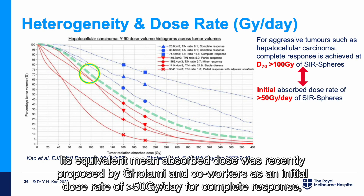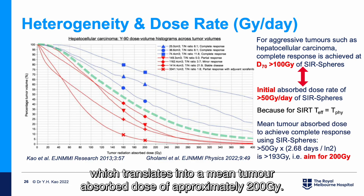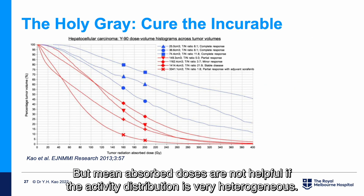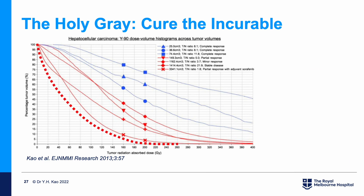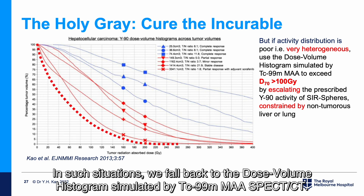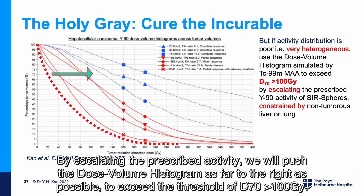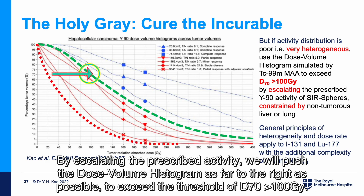An equivalent mean absorbed dose was recently proposed by Gollami and co-workers as an initial dose rate of greater than 50 grey per day for complete response, which translates into a mean tumour absorbed dose of approximately 200 grey. However, mean absorbed doses are not helpful if the activity distribution is very heterogeneous. In such situations, we fall back to the dose-volume histogram simulated by MAA SPECT-CT, and by escalating the prescribed activity, we push the dose-volume histogram as far to the right as possible to exceed the threshold of D70 greater than 100 grey.